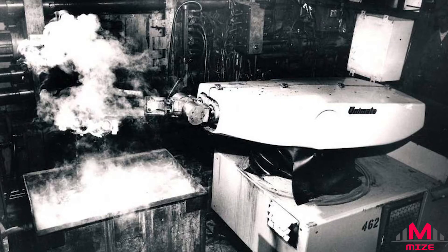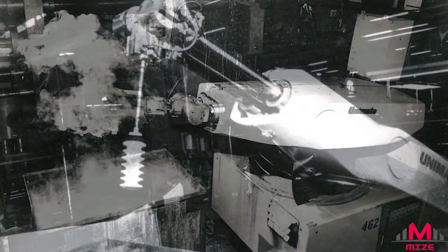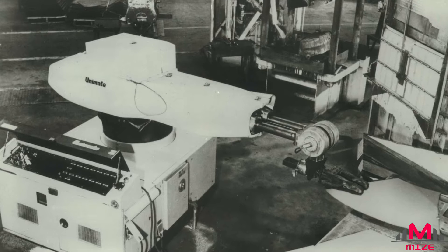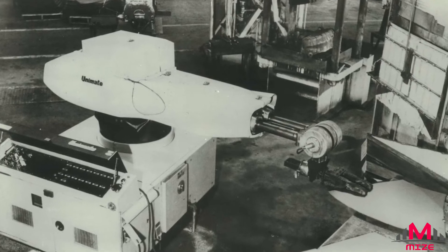Robots were first put to work in 1961 when General Motors installed Unimate. This was a 1.8-tonne die-cast robot arm that dealt with red-hot metal car door handles and other parts, dangerous and unpleasant work for humans.